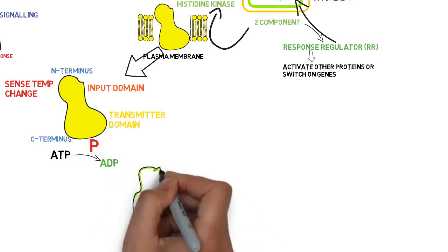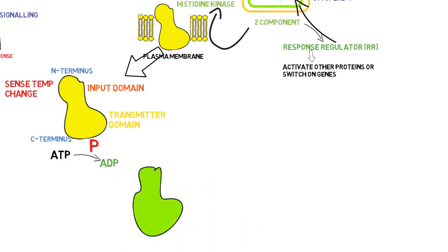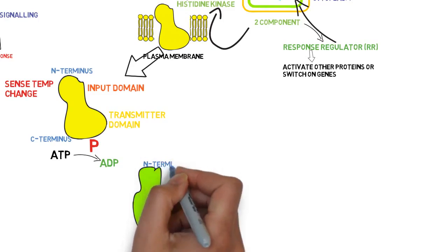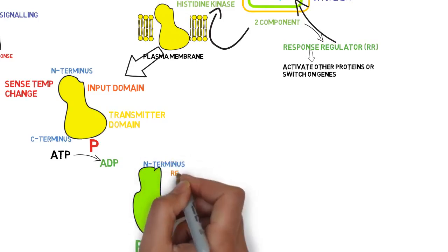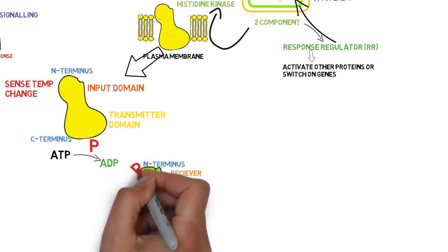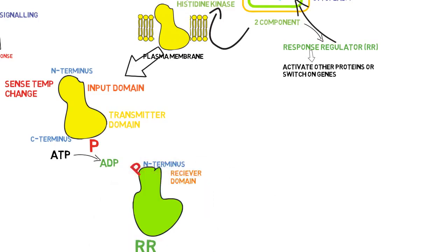With phosphorylation, this histidine kinase is activated and capable of transferring its phosphate group to the N-terminus of another protein called the response regulator. This N-terminus of the response regulator is called the receiver domain.